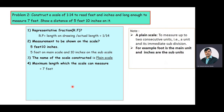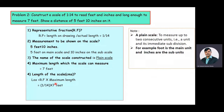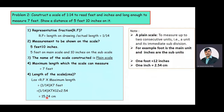The length of the scale value equals RF multiplied by maximum length. RF is 1 by 14 and maximum length is 7 feet. Converting: 7 feet to inches (1 foot = 12 inches), then inches to centimeters (1 inch = 2.54 cm). After simplifying, the length of the scale value is 15.24 centimeters.